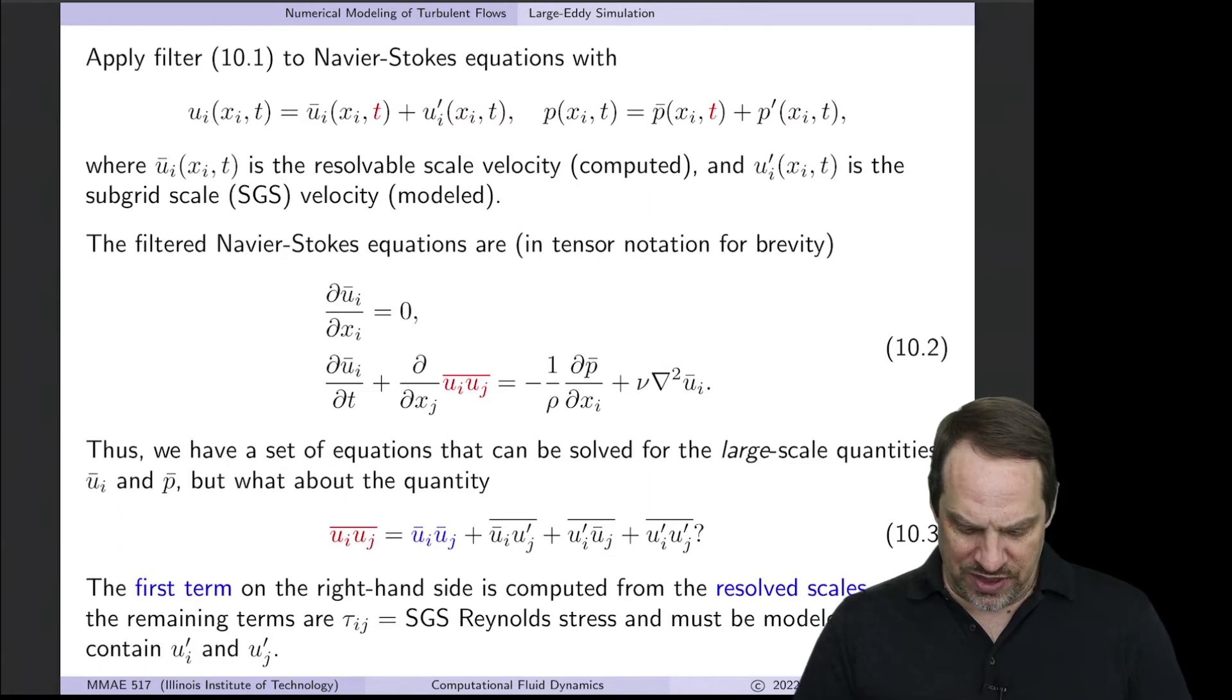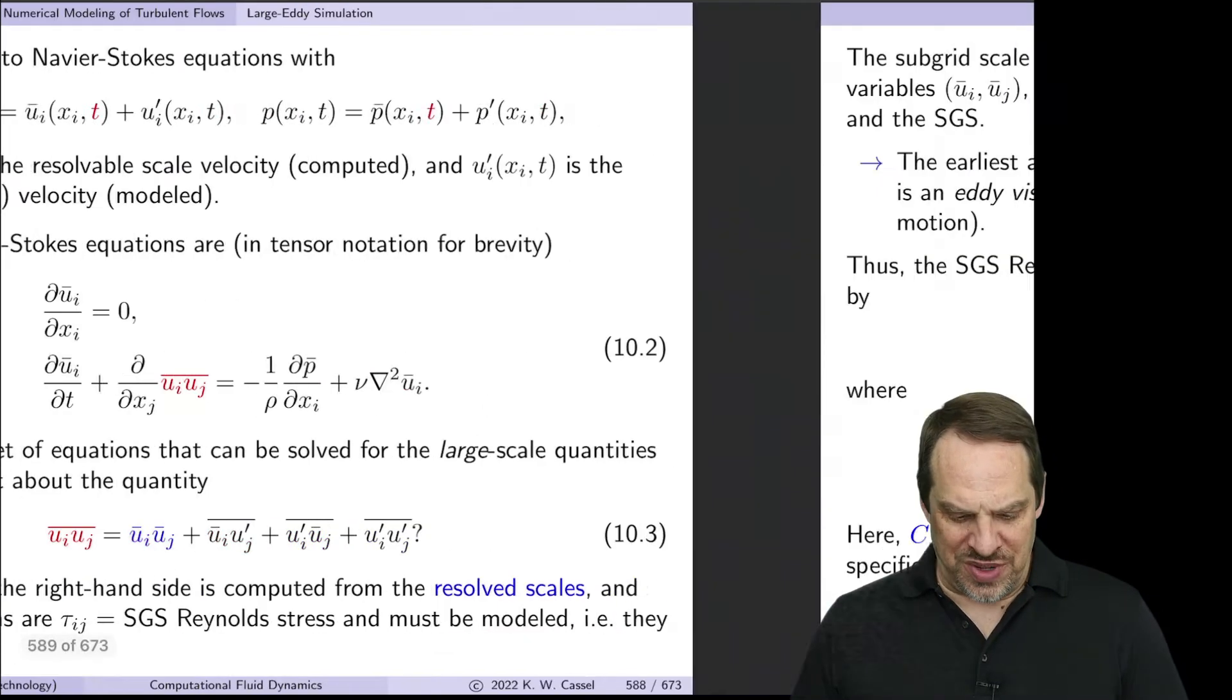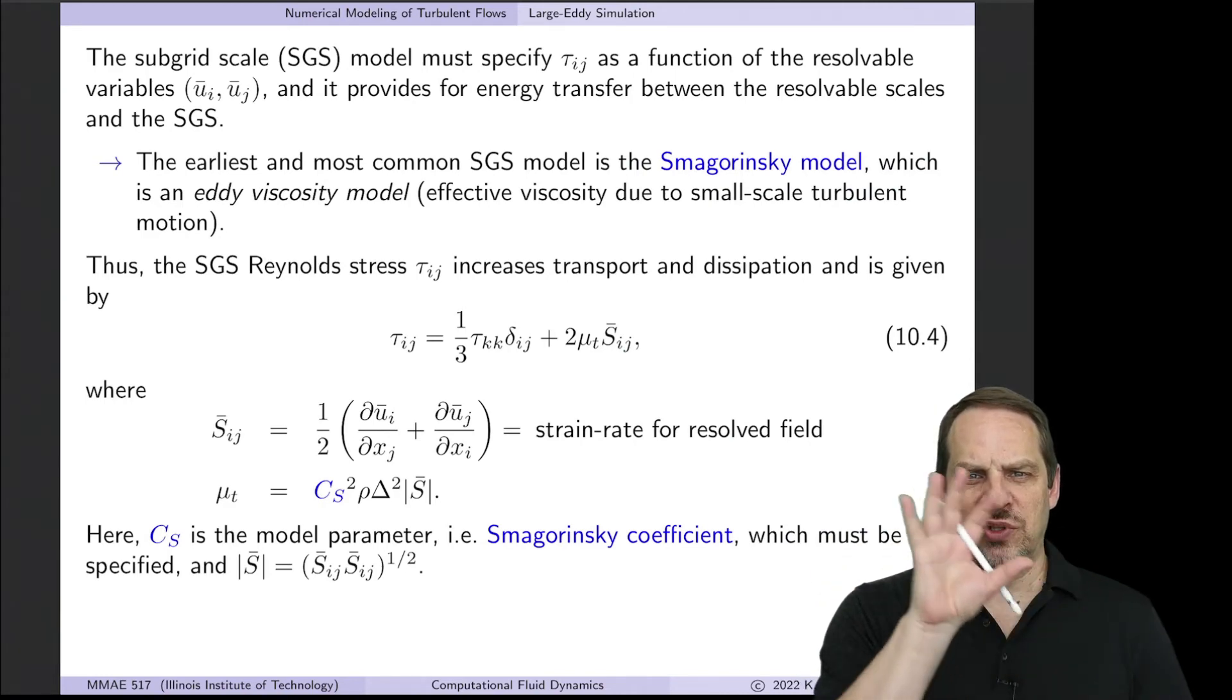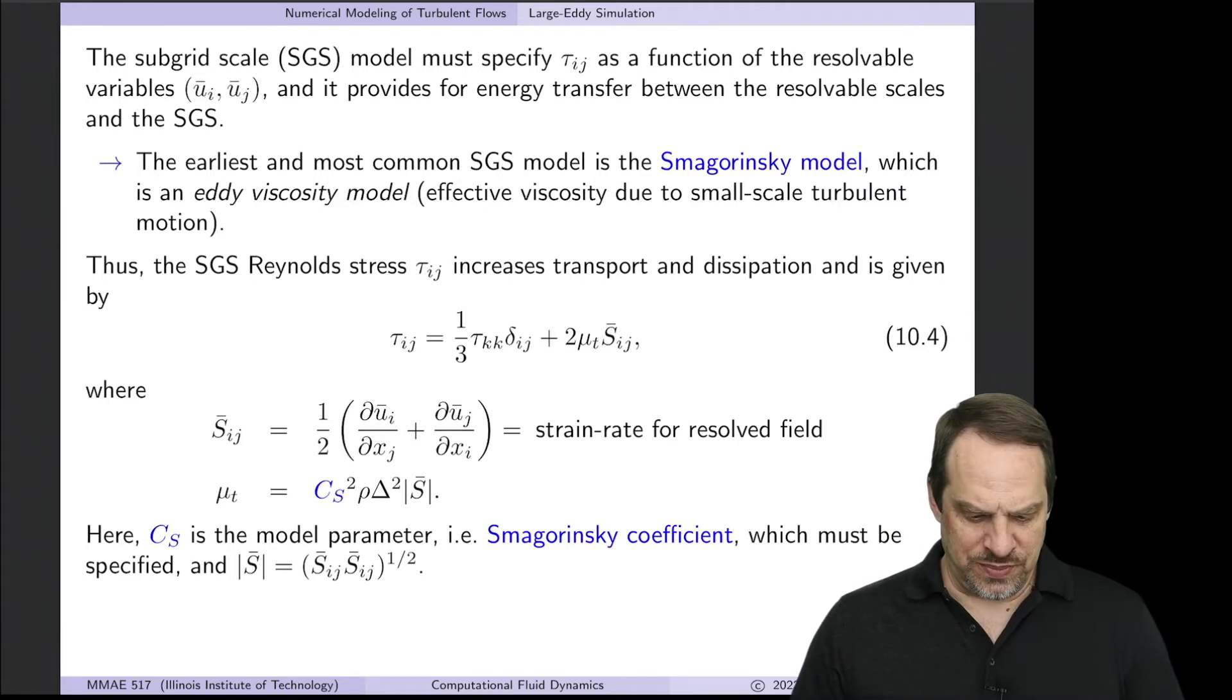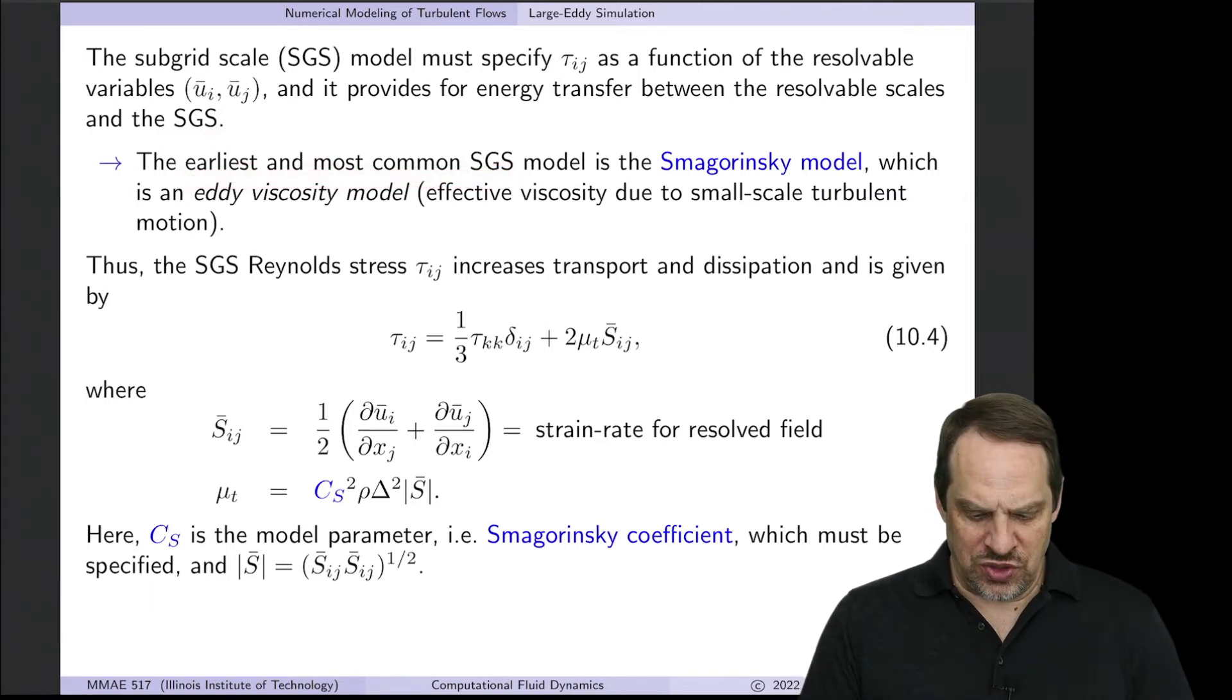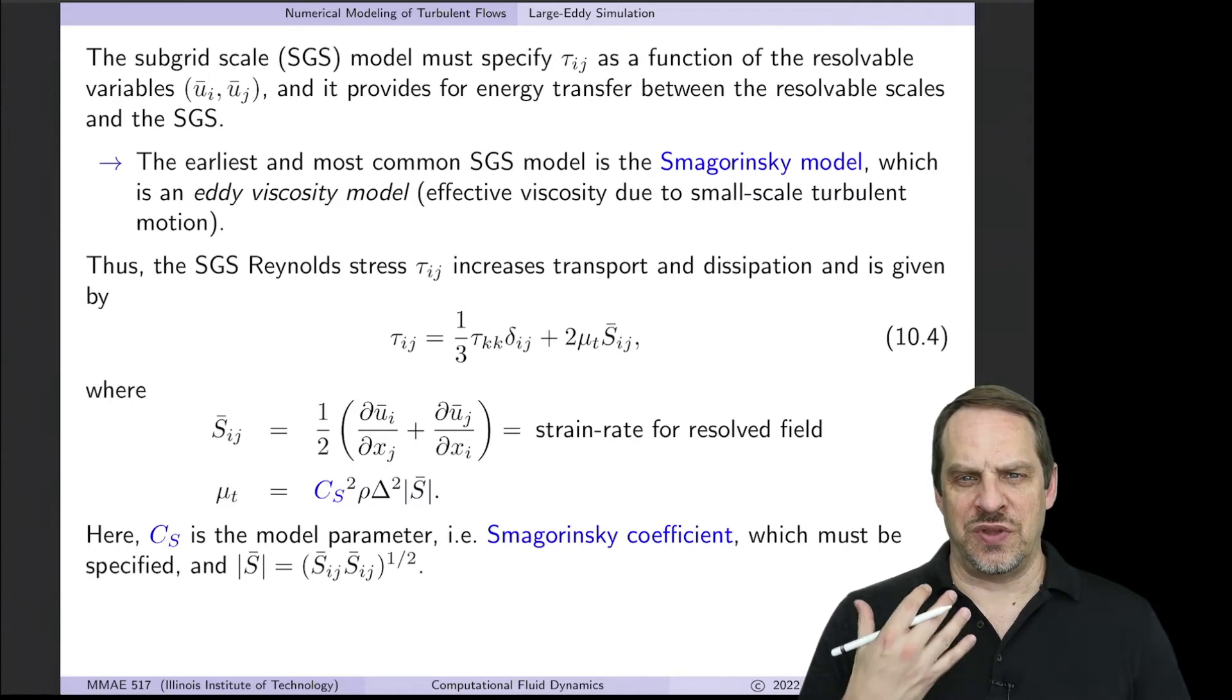Those extra terms are called the SGS Reynolds stress—the subgrid scale Reynolds stress. Next we need to think about connecting these two. We need a model accounting for what's happening in the large scale and how energy feeds down to smaller scales. The earliest and most common SGS approach is the Smagorinsky model.